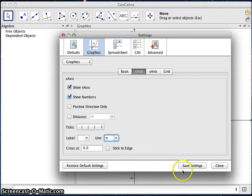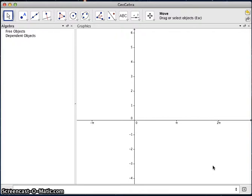Once you change those units to pi, save the settings, and then close this, and you'll notice now your graph in the x-axis is marked off in units of pi, and we're ready to begin.